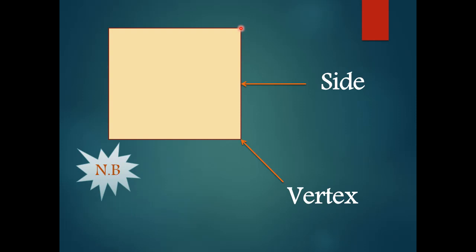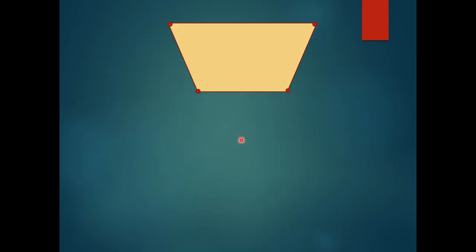My students, don't forget — this line segment we call a side, and this point we call a vertex. What is a vertex? A vertex is the meeting point — it is not a side. Side and vertex, side and vertex. How many vertices? Four, teacher.